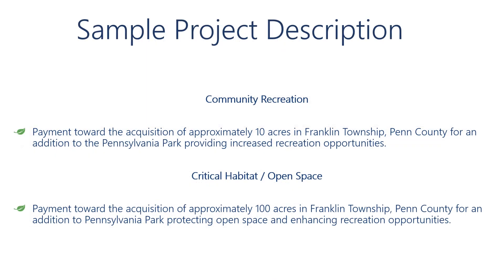Too many times we see applicants address a project's needs, benefits, and urgencies in the brief project description section in the portal application. If you give us information in the scope that should be addressed in the criteria questions, it is possible that important project details could be overlooked by a reviewer. So keep your project description very brief. Always include the acres, municipality, county, and goal for the acquisition.